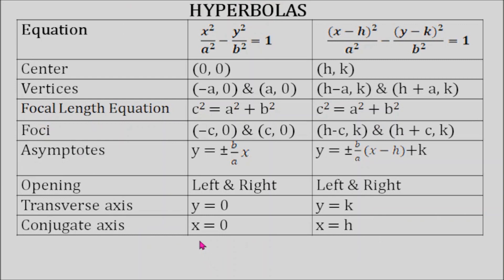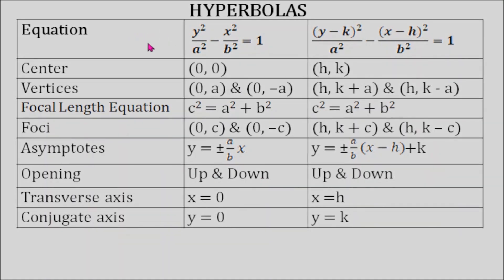This table shows the equation, the center, the vertices, the focal length equation, the foci, the asymptotes, the opening, transverse axis, and conjugate axis of hyperbolas. If our equation starts with x squared, our graph opens to the left and to the right. If our equation starts with y squared, our graph opens upward and downward. We are going to use this table in answering questions about hyperbolas.